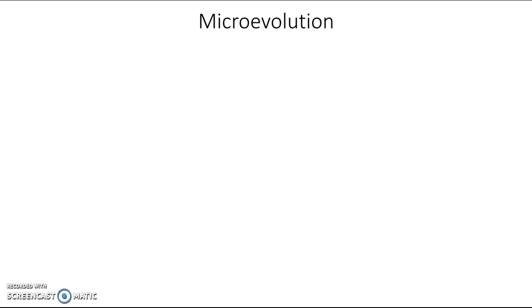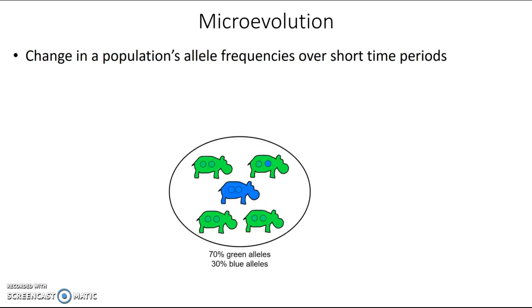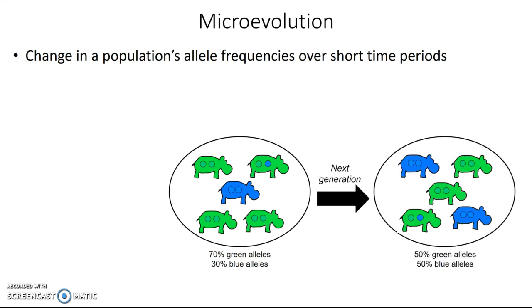Let's start by reviewing the definition of microevolution, which is change in populations' allele frequencies over short time periods, such as from one generation to the next. If we take a look at this hippo population, where the circles inside each hippo represent alleles for hippo color, you can see that in this generation the population has 70% green alleles and 30% blue alleles. In the next generation, they have 50% green and 50% blue alleles. So the allele frequencies change, meaning this population is not at Hardy-Weinberg equilibrium — it is evolving.